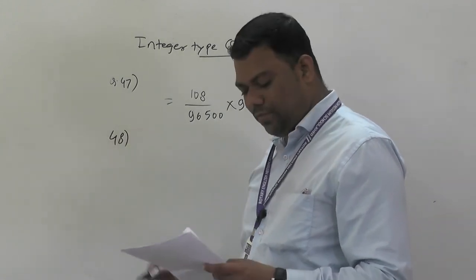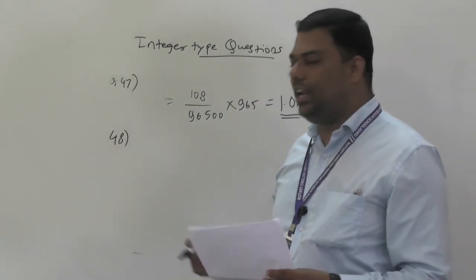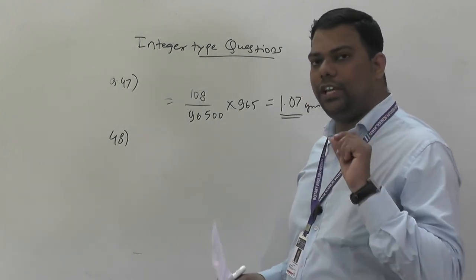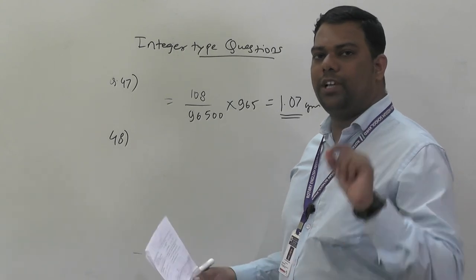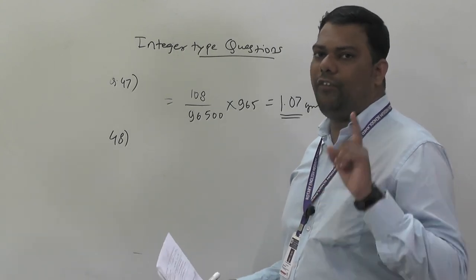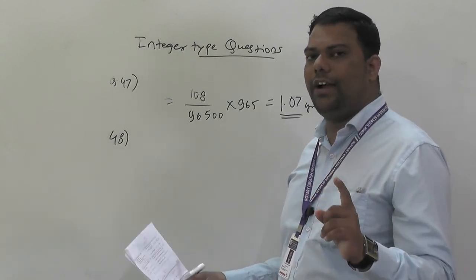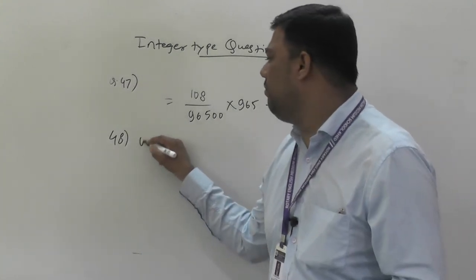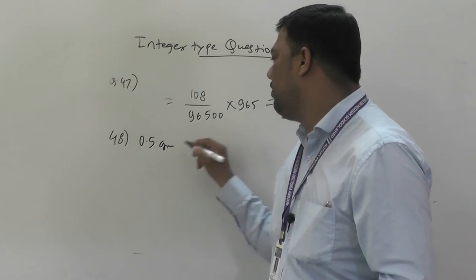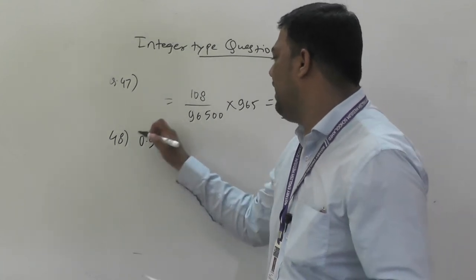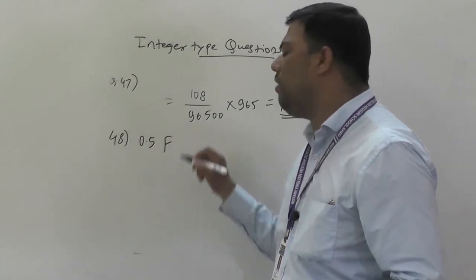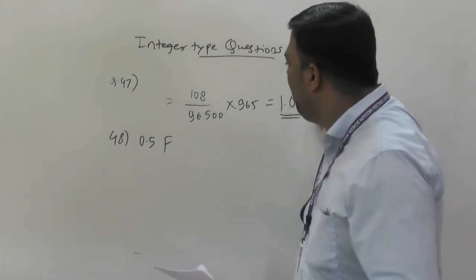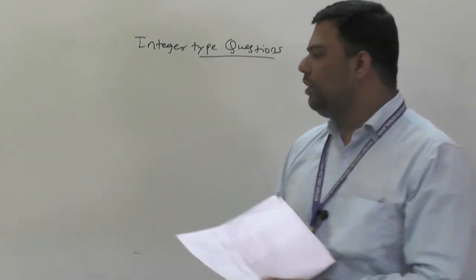Question number 48: charge required to liberate 11.5 grams of sodium. Sodium atomic mass = 23. One Faraday is required for 23 g, so for 11.5 g (= 23/2), the answer is 0.5 Faraday.